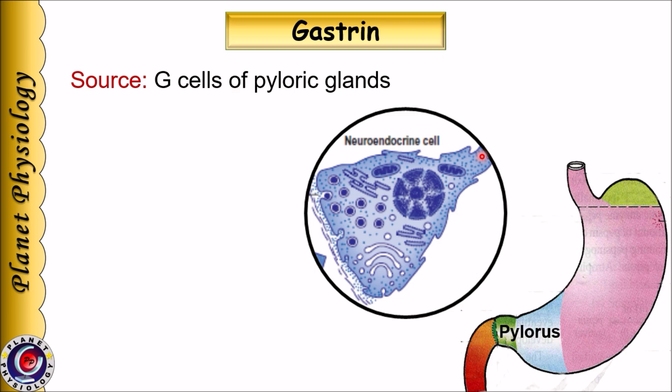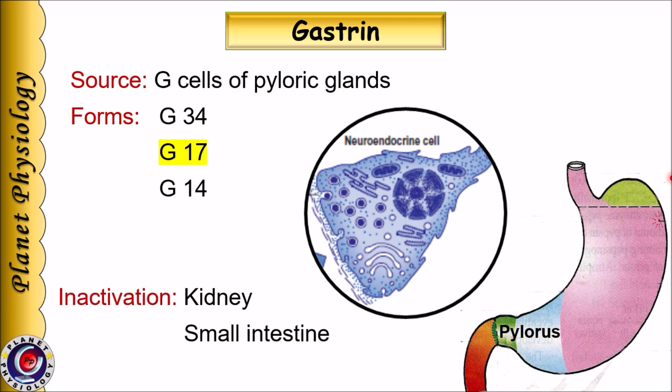Gastrin secretion is mediated in response to changes in the gastric contents. Gastrin is synthesized as pre-pro-gastrin and then processed into fragments of various sizes. Based on the number of amino acids, they are named as G34, G17, G14, etc. Apart from these, other forms of gastrin are also secreted in circulation. However, G17 is the principal form of gastrin concerned with gastric acid secretion.